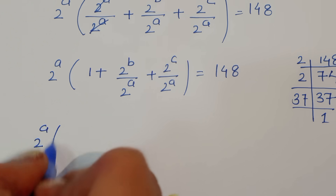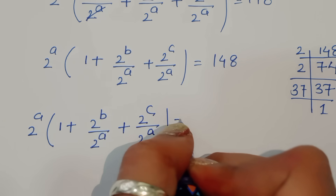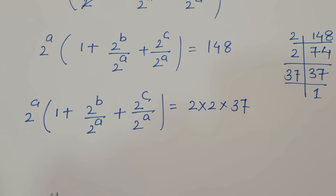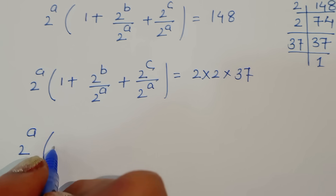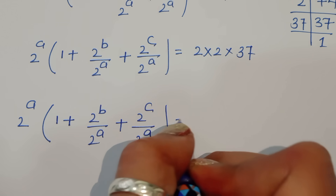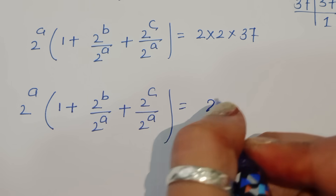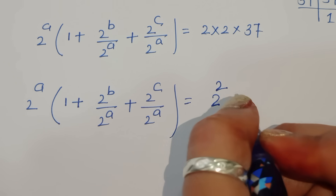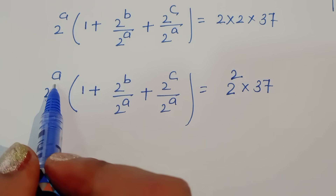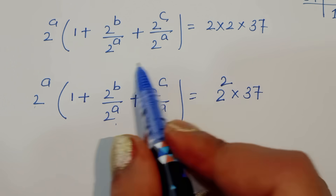So we can write: 2 power a times (1 plus 2 power b upon 2 power a plus 2 power c upon 2 power a) is equal to 4 times 37. We can write 4 as 2 power 2, so the right-hand side becomes 2 power 2 times 37.